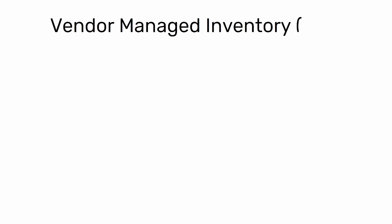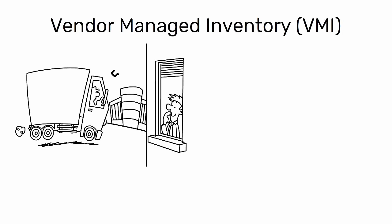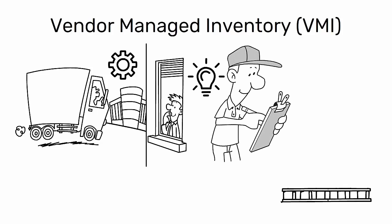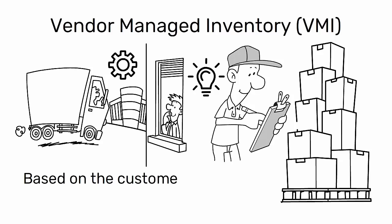Vendor Managed Inventory, VMI, is a supply chain management strategy where the supplier takes responsibility for managing and replenishing inventory based on the customer's inventory levels and demand forecasts.